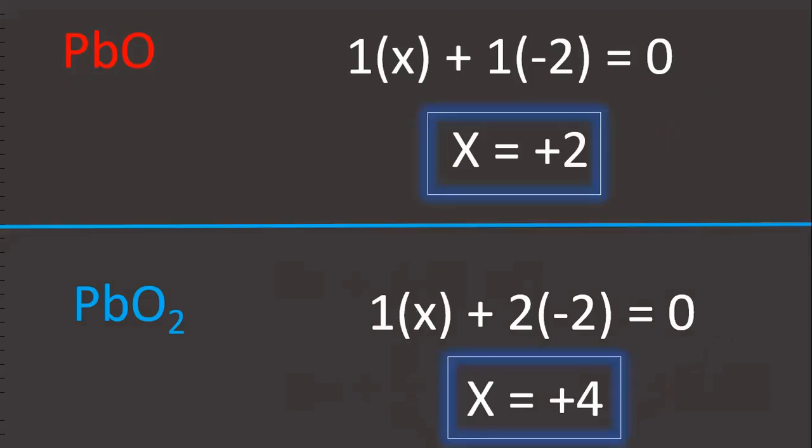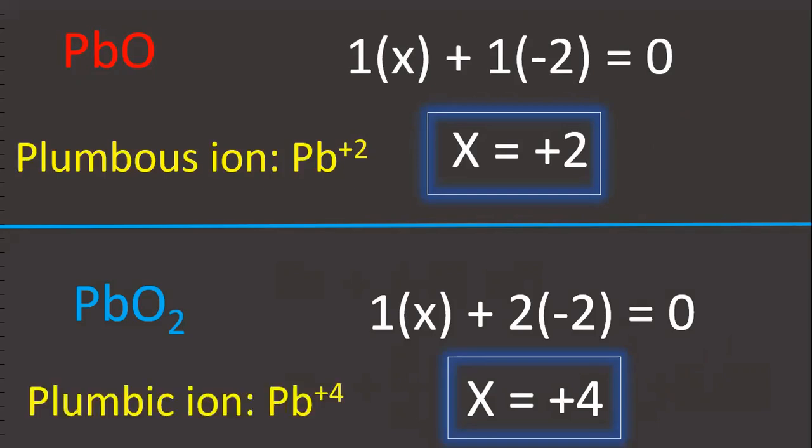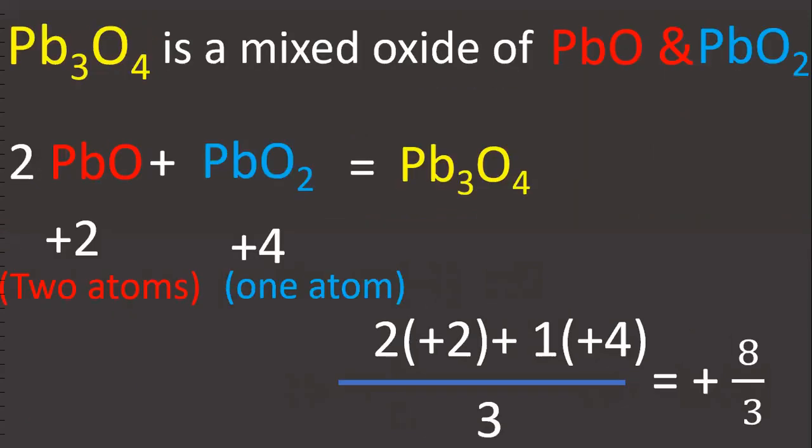Plus 2, plus 4. Pb²⁺ ion is called plumbous ion. Pb⁴⁺ ion is called plumbic ion.